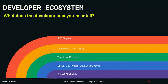Essentially, it's everything that sits outside of the platform and interacts with it. So that's everything from your OpenAPI models and the SDKs built on top of it, all the way to your IDE plugins. That team was actually started in 2022, and they built everything from scratch. The mission was to make sure that we have this layer cake where one thing builds on top of the other, and we can automate processes.